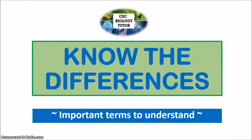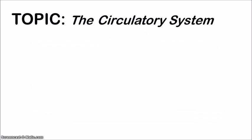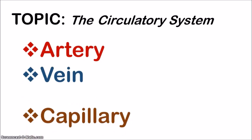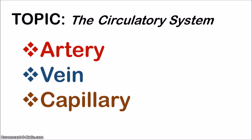Hey, it's Michelle, your CSC Biology Tutor. Welcome back to the Know the Differences series in which I go through important terms with you that you need to understand. In this video I will be looking at the circulatory system and I'll be paying special attention to the three blood vessels: the artery, the vein, and the capillary. You need to be able to distinguish between these three blood vessels based on their structure and their functions.